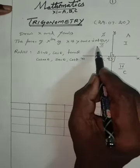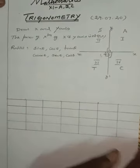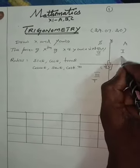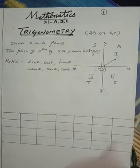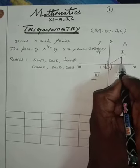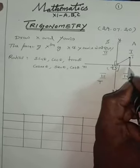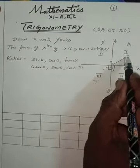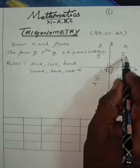Each quadrant contains 90 degrees. Take a single point T. Join O to T. Draw a perpendicular line from T to the X axis. T meets the X axis at point L. Now, O, T, L form a right-angled triangle.